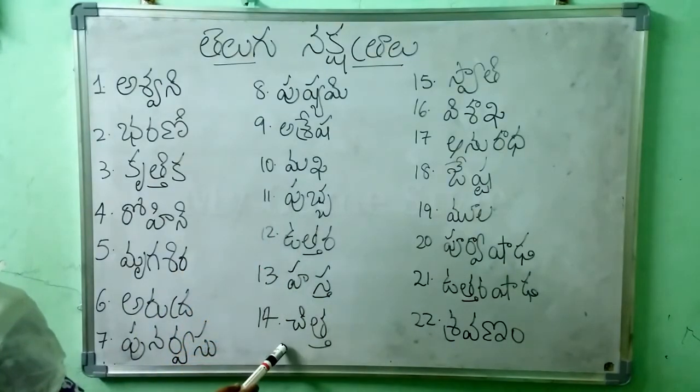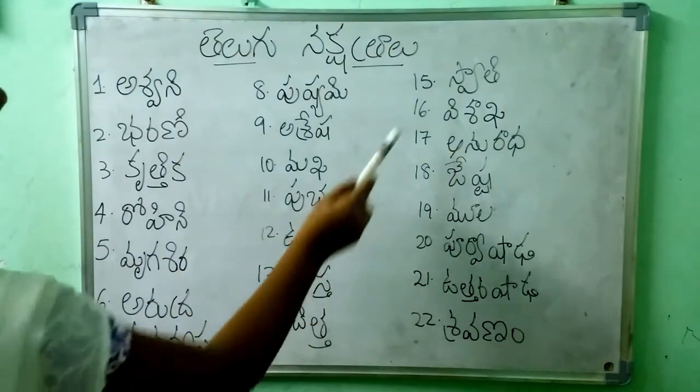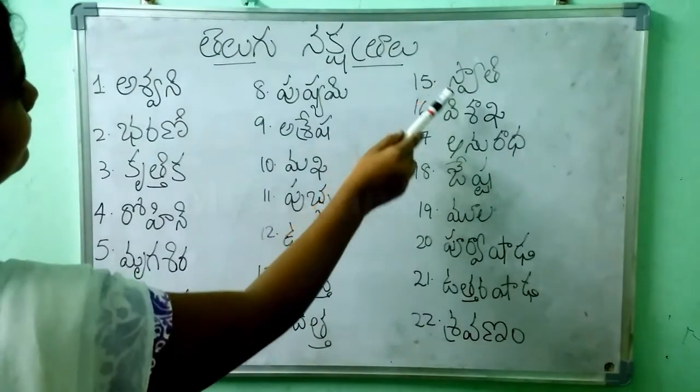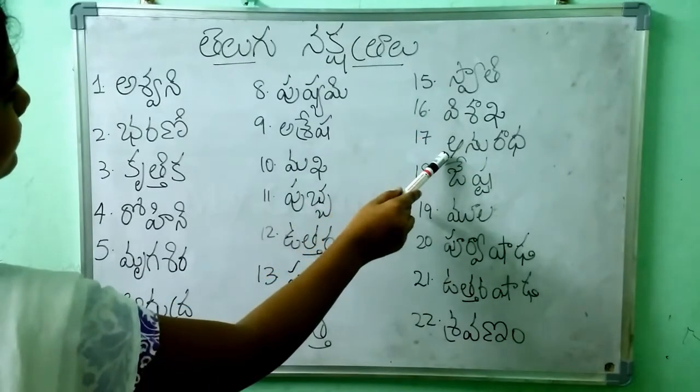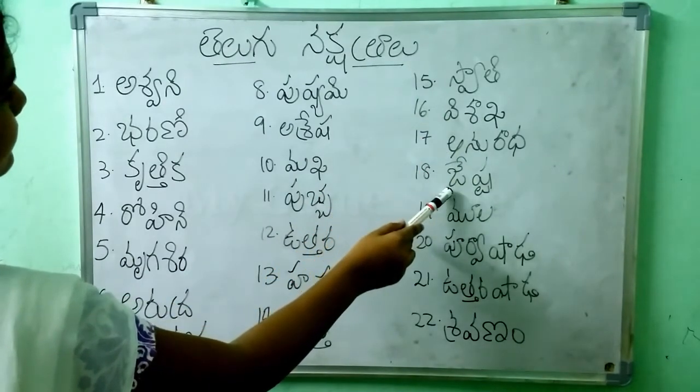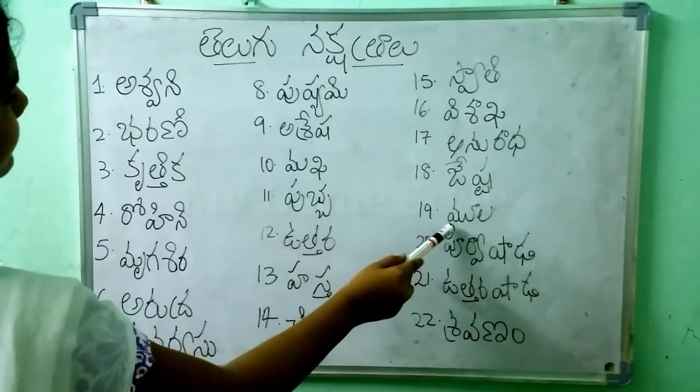Hasta, Chitta, Swati, Vishaka, Anuradha, Jesta, Mula,